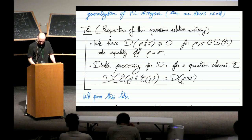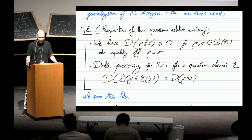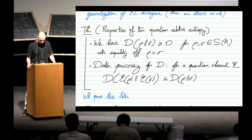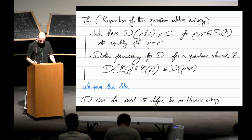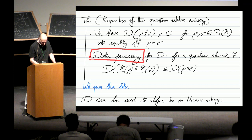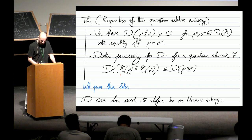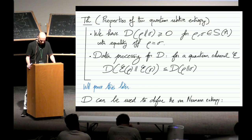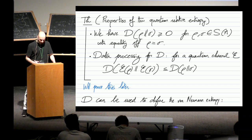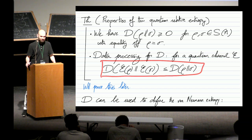A few properties of the quantum relative entropy: if rho and sigma are both states, the relative entropy is non-negative, and equals zero if and only if rho equals sigma — so it's a valid measure. Most importantly, it satisfies the data processing inequality: if I apply a channel to both sides, the quantity can only decrease. I won't prove this today; it will be the objective of tomorrow's lecture.